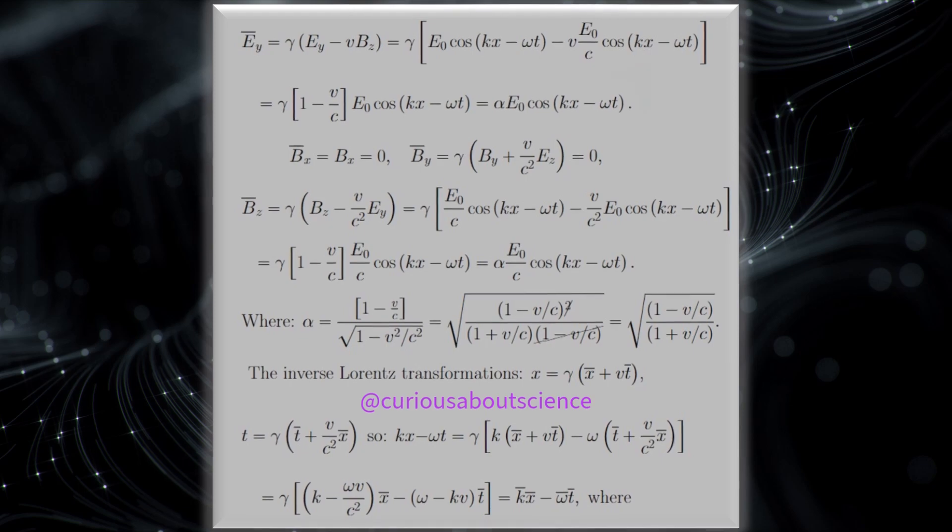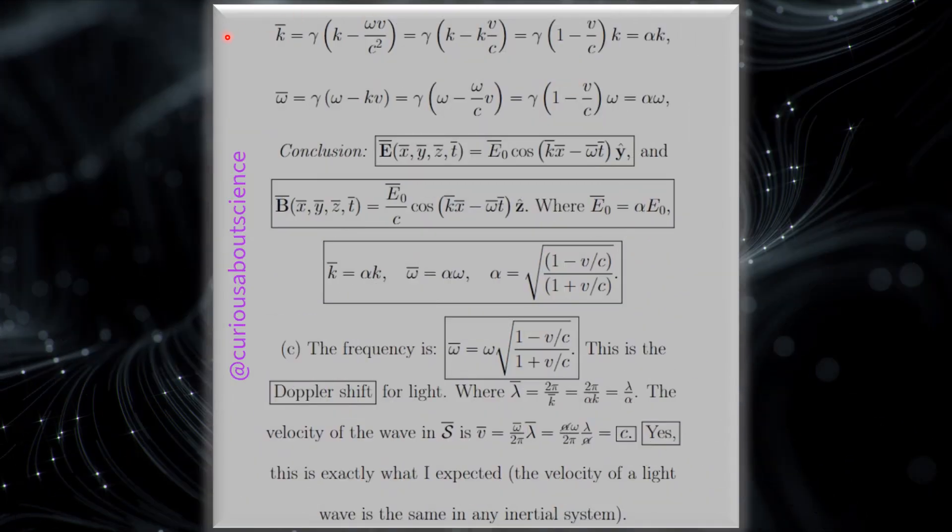Now, the inverse Lorentz transformation tells us that we have x equal gamma (x bar plus V t bar). So, if we want to solve this through and re-substitute everything in, we have kx minus omega t is equal to gamma. And now, we just have to plug in what we know for x and t. So, here you see x here, t here, and simplify what you can do. You'll get all the x bars right here, all the t bars right here. And when you do that, you see that the thing in the parentheses turns to the k bar, and the thing in the parentheses here turns to the new omega bar.